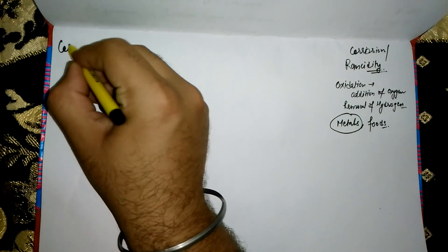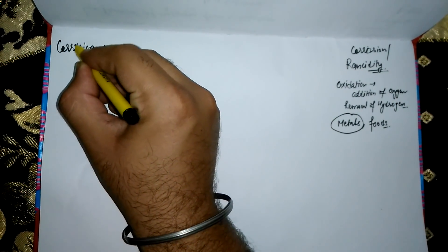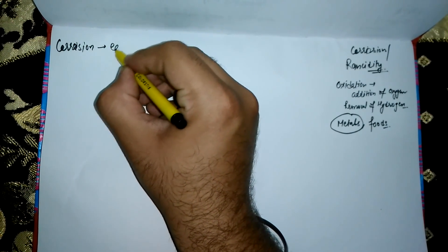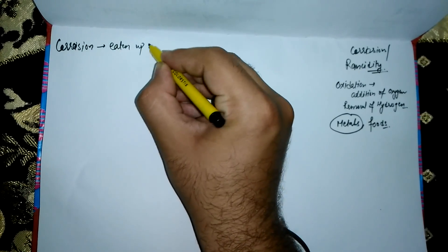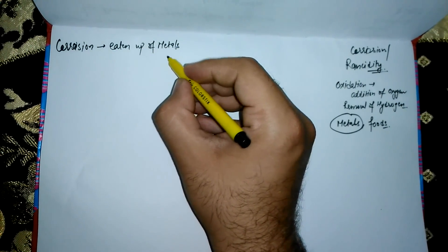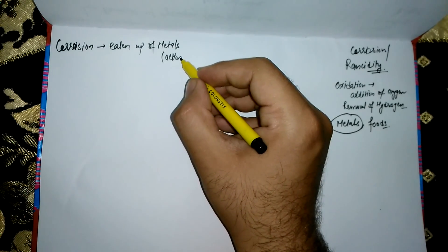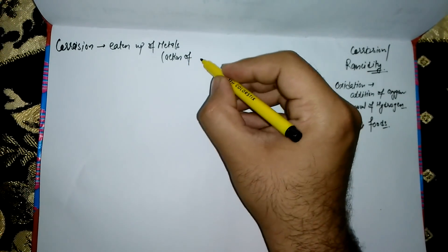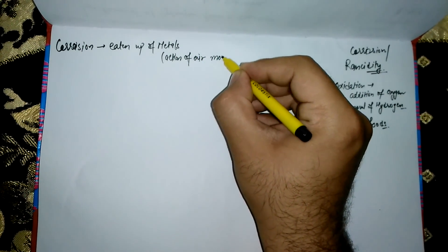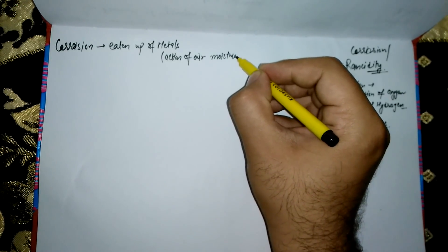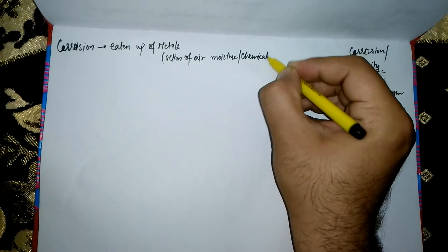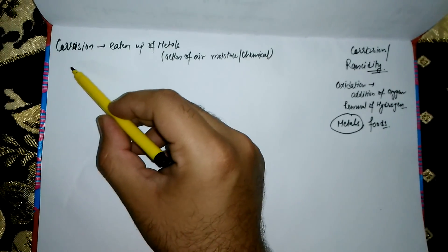When we talk about corrosion, corrosion is a process in which metals are eaten up gradually by the action of air and moisture, or by a particular chemical. Remember, the action may be gradual or sometimes fast. When this occurs, we say corrosion is happening on the surface of the metal.